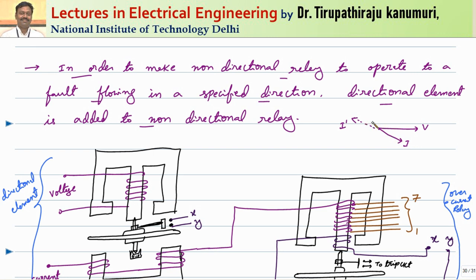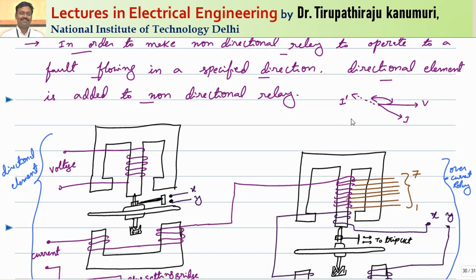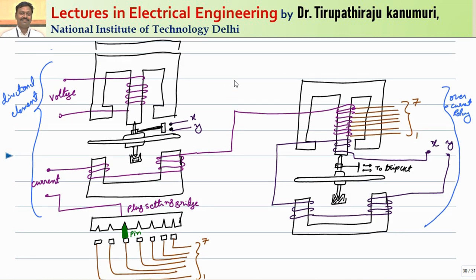When the direction of current is reversed, the current is now leading the voltage. The torque is produced due to the interaction of two fluxes, and the torque is produced in the direction from the leading flux to the lagging direction — as we have already seen in previous lectures with the induction disk. That is why the direction of torque will be reversed, and because of that the relay will operate. The directional element has an upper magnet and a lower magnet; the upper magnet winding is connected to the supply voltage through a potential transformer.